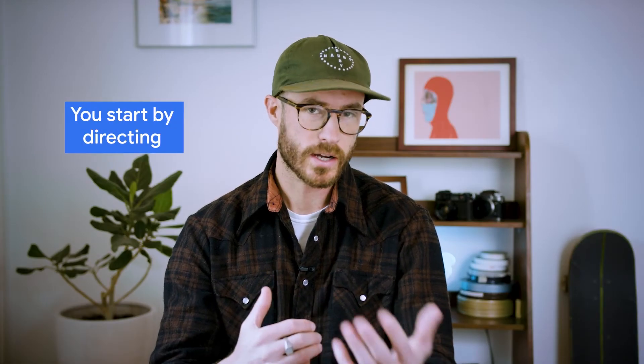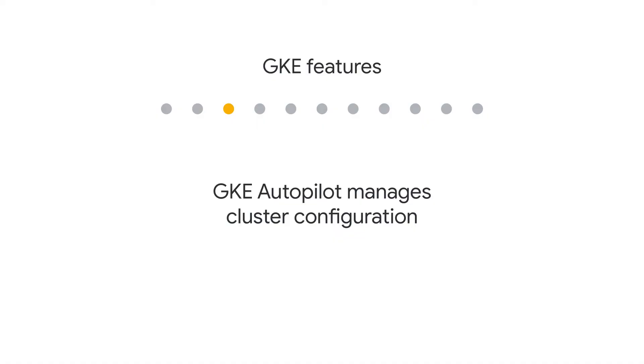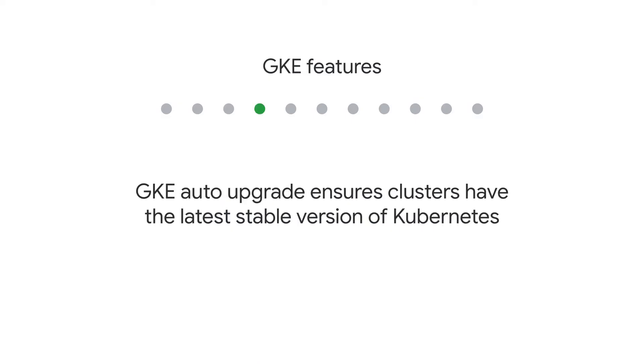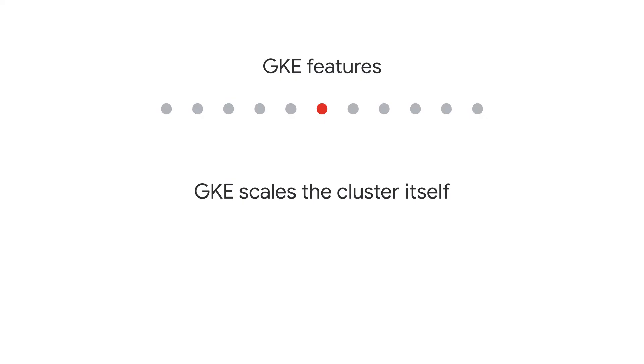When you use GKE, you start by directing a service to create a system, or a cluster. GKE Autopilot will manage cluster configurations, Auto-Upgrade will make sure everything is staying up to date, and Auto-Repair will make sure your nodes — the VMs that host containers — are healthy. And GKE scales clusters itself. You're probably noticing a trend here: automation.